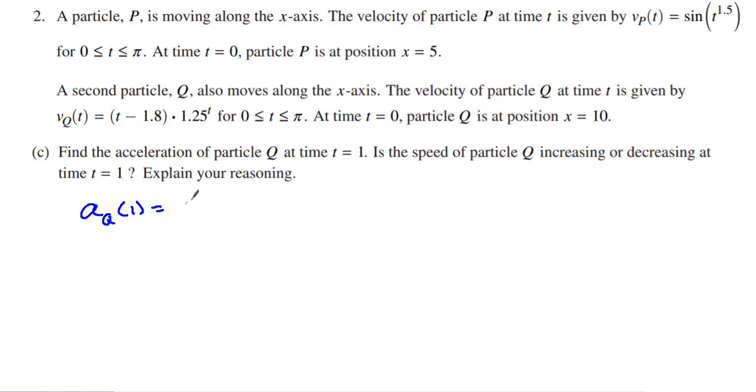So we want to find the acceleration of particle Q at time equals 1. So what do we have to do? We have to do the derivative with respect to time of V of Q. Remember, we're doing particle Q of T. Or you could do d dx of my g of x, because I define the Q as g of x. I've got to make sure I do that correctly in my calculator. And I end up getting positive 1.026856. And so that is the acceleration.